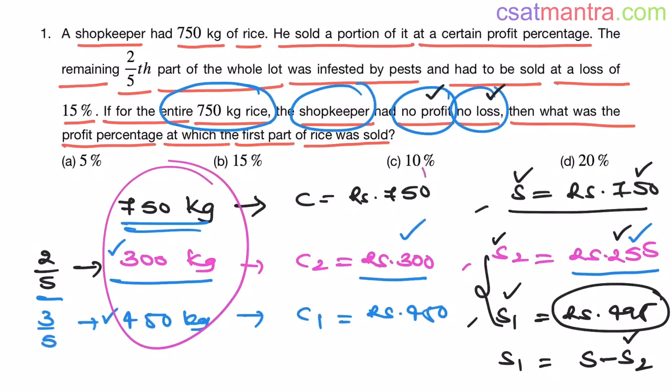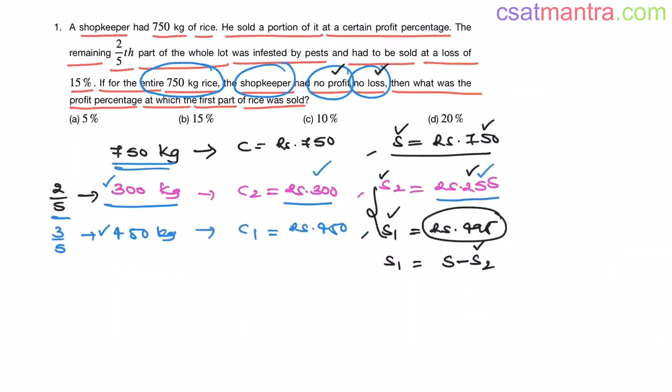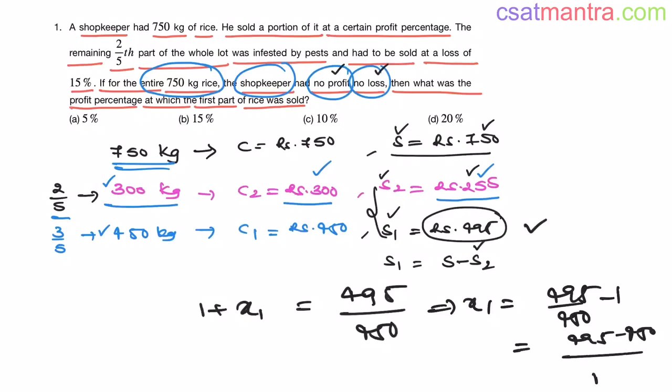Now, see here weights are matching, cost prices and selling prices are matching. Now, the profit percentage of this portion. 1 plus X1 is equal S1 by C1. S1 is 495. C1 is 450.